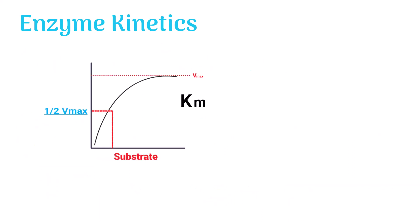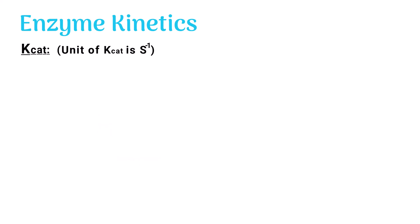Km is the concentration of substrate at which the rate of the reaction is half of Vmax. KK or turnover number represents the maximum turnover rate of an enzyme.